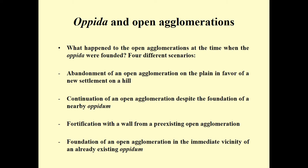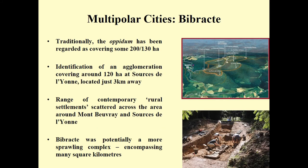Sometimes we have the abandonment of an open agglomeration in favor of a new settlement — a move from the plain to the hill, for example at Levroux in France. Sometimes we see the continuation of an open agglomeration despite the foundation of an Oppidum nearby. In other cases, a pre-existing open agglomeration becomes fortified at a certain moment of its history — this is the case, for example, at Manching in Bavaria. And finally, in some cases we also have the foundation of an open agglomeration in the immediate vicinity of an already existing Oppidum.